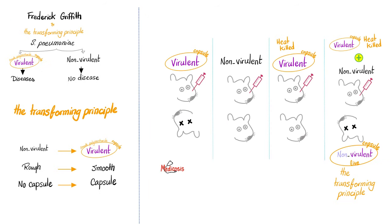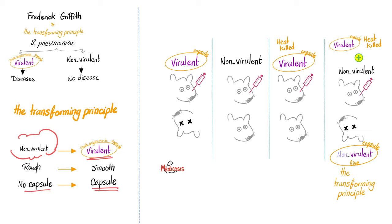Here is the transforming principle recap: virulent bacteria — mouse is dead. Non-virulent — mouse is alive and well. Heat-killed virulent — mouse is alive and well. Heat-killed virulent plus non-virulent — the non-virulent acquires the capsule from the virulent through DNA transformation, and it transforms from non-virulent to virulent, from uncapsulated to capsulated, from rough to smooth, from non-deadly to deadly. This is the transforming principle.